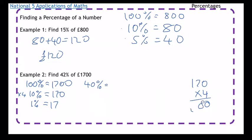And I'm also going to find 2%. So 2% is 1% times 2, which is 34.